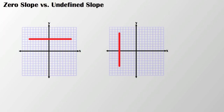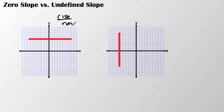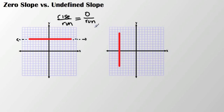Two other situations you need to think about are zero slopes versus undefined slopes. Looking at a horizontal line, if I consider rise over run, in this case I have no rise — there's zero rise. The run keeps going, essentially an infinite value, but zero divided by any value is still zero. So a horizontal line has a zero slope.